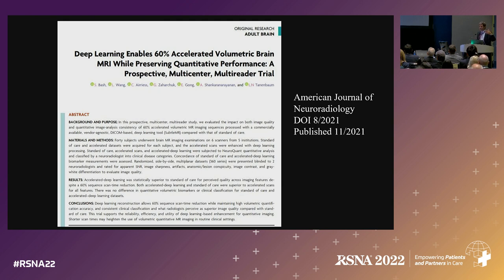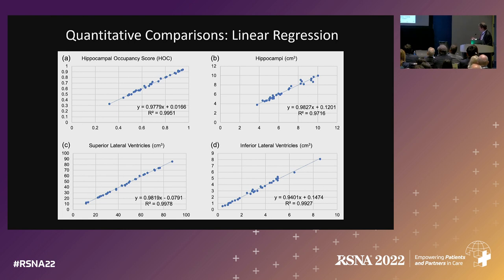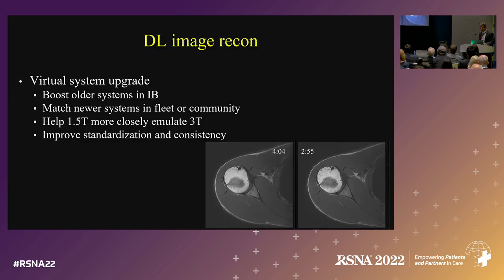We maintain the quantitative integrity. In another paper, we showed that when we accelerated our 3D images by 60%, we still maintained quantitative integrity. This was last year's ASNR Image of the Year. Most importantly, we showed that we got the same quantitative numbers in volumetric assessment with the accelerated sets as we did with the routine standard of care at much longer scan times.